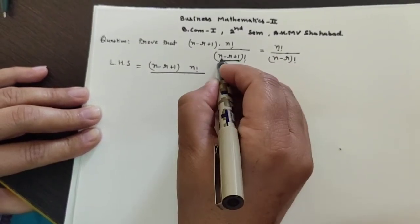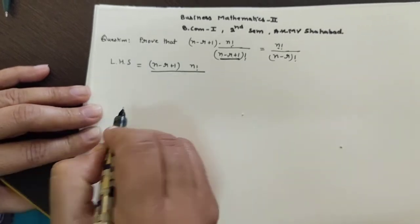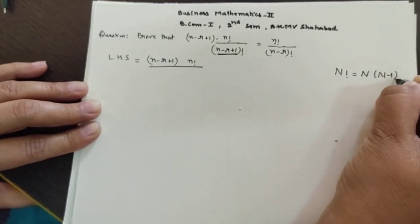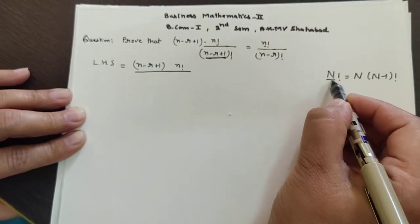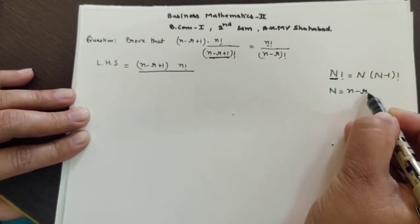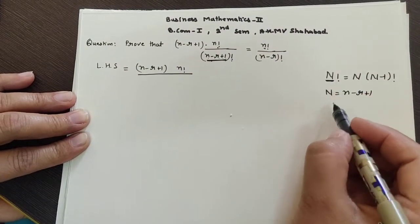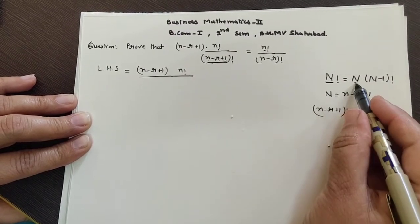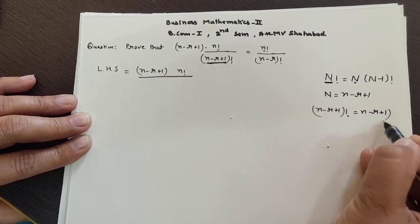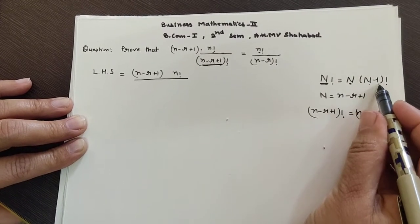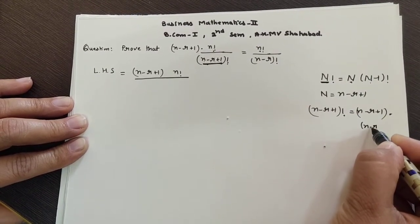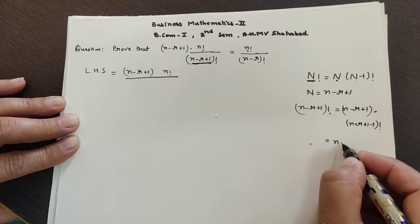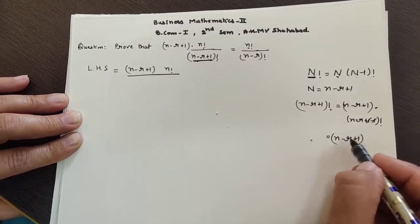Applying the formula n! = n·(n-1)! to (n-r+1)!: here capital N = n-r+1, so (n-r+1)! = (n-r+1)·(n-r+1-1)! = (n-r+1)·(n-r)!. The term (n-r+1) is outside, multiplied by (n-r)!.